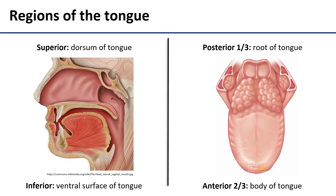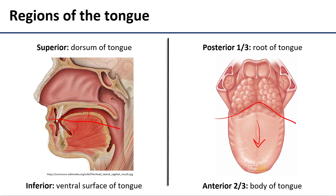We're going to start off by very simply dividing the tongue up in four regional directions. The first division will be superior-inferior. The superior surface of the tongue we'll call the dorsum of the tongue, and the inferior surface we'll call the ventral surface. The second division will separate the anterior two-thirds of the tongue from the posterior third. The anterior section is called the body and the posterior section is called the root of the tongue.